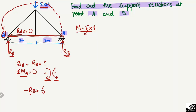The 5 kN load acts in the downward direction and creates a clockwise moment about point A, which is positive. The moment arm is the perpendicular distance from the load to point A, which is 3 meters. So the term is +5 kN × 3 m. Setting the summation of all moments about point A equal to zero gives us our equation.